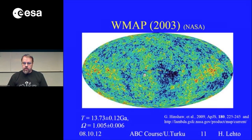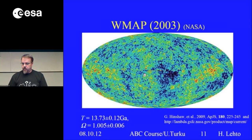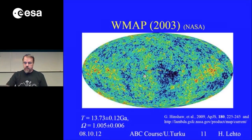From this data — the Wilkinson Microwave Anisotropy Map — we can get an age of the Universe of 13.73 billion years, and a critical density, which means the Universe is flat: the mean density equals the critical density. So the Universe is a nice-looking place to live in, and the geometry is simple because it's flat.